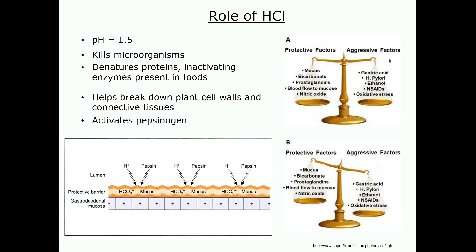Other factors act to damage the mucosa, such as the bacteria H. pylori, stress, alcohol, and NSAIDs. Normally these factors are in balance, but loss of a protective factor or increases in the damaging factors can tip the balance, allowing damage to the tissue.